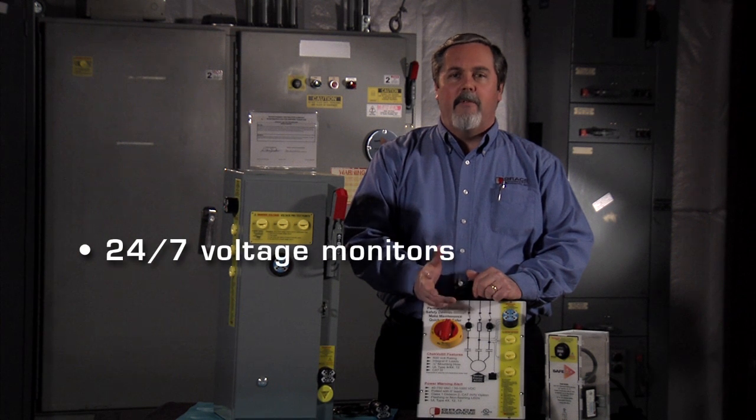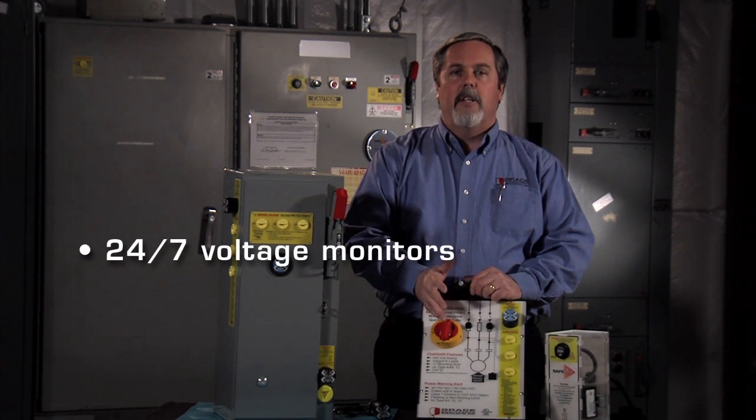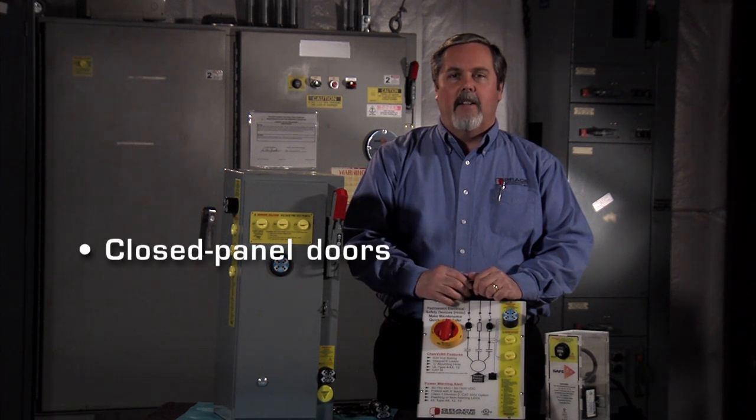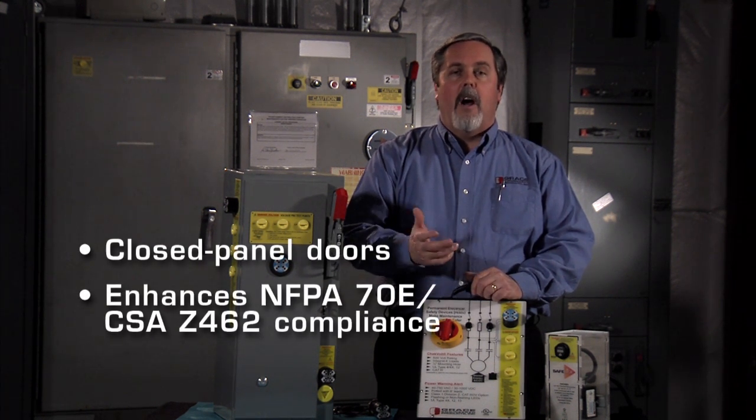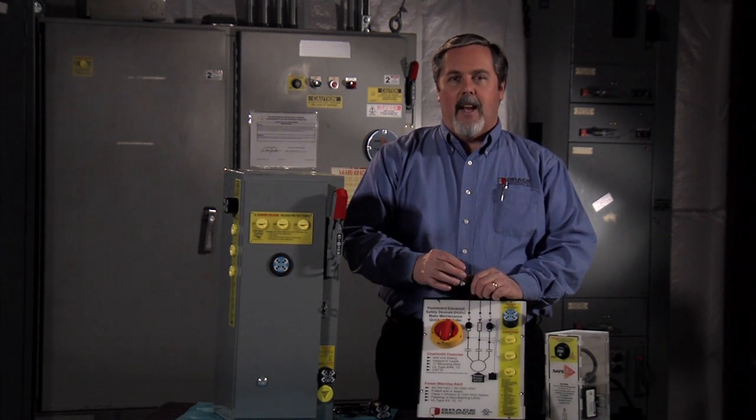These voltage indicators are 24-7 voltage monitors that provide information to you outside of your cabinet. They do that through LED functionality and provide you information on blown fuses, stuck blades, and other things. Let's talk about some of those features now.